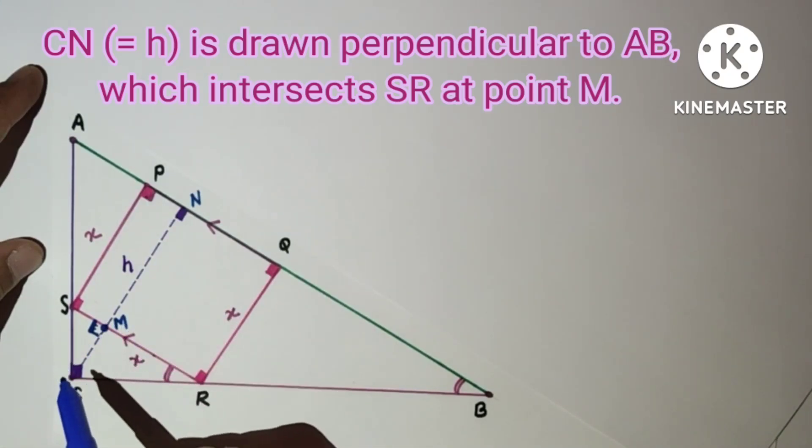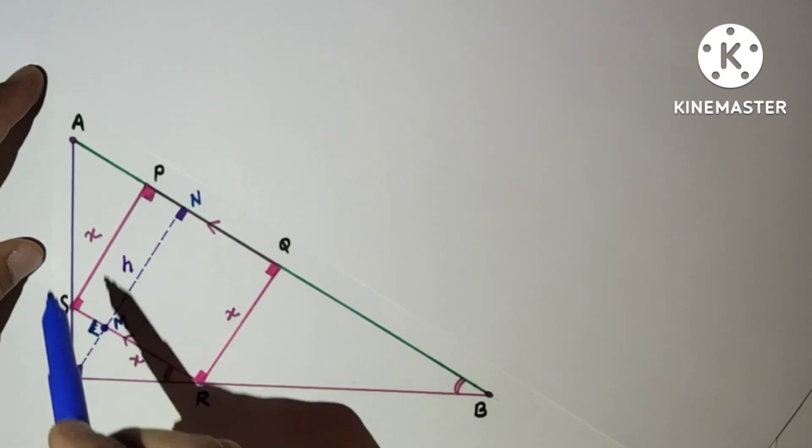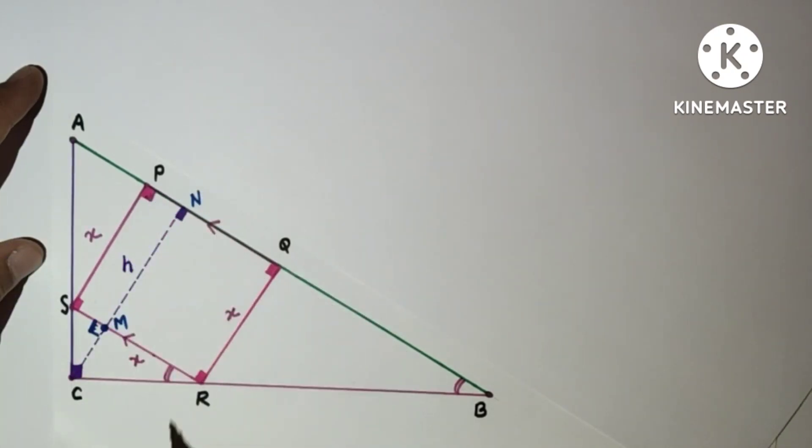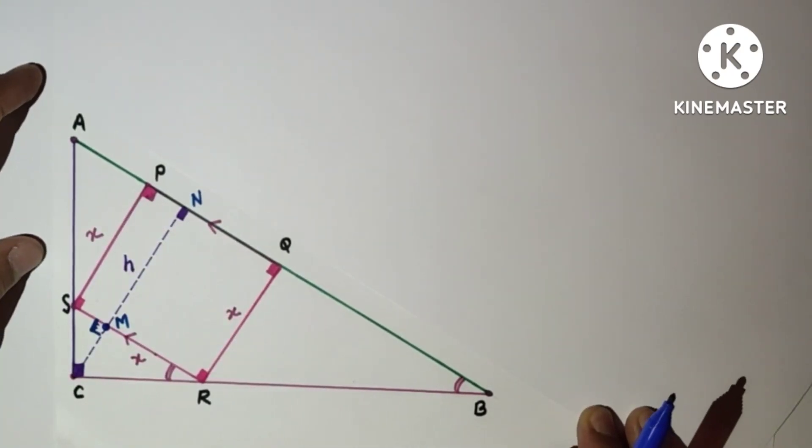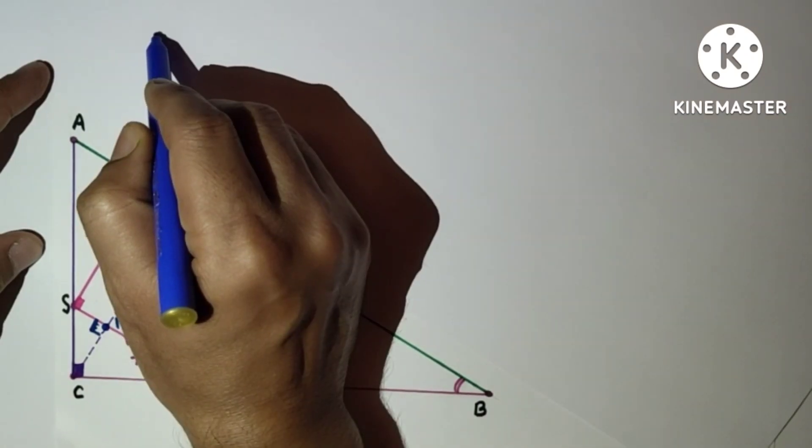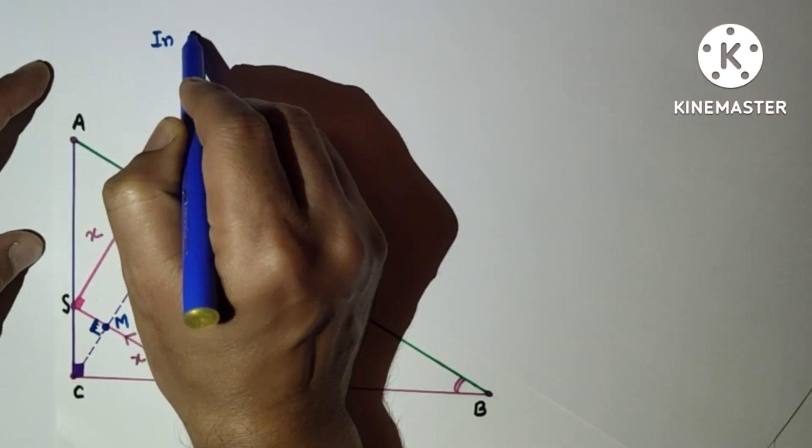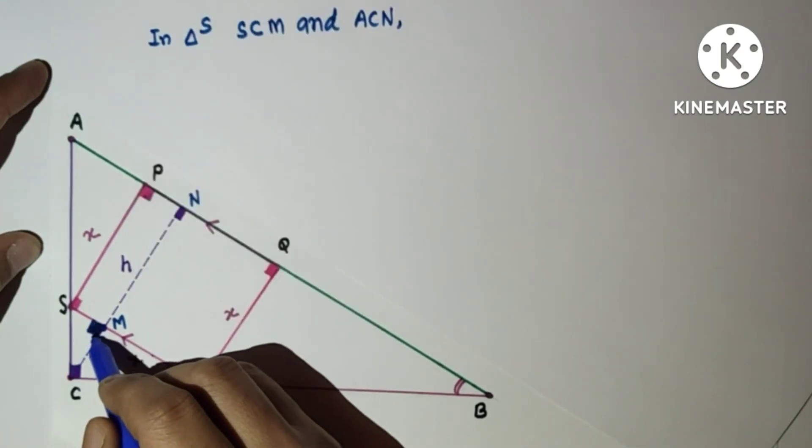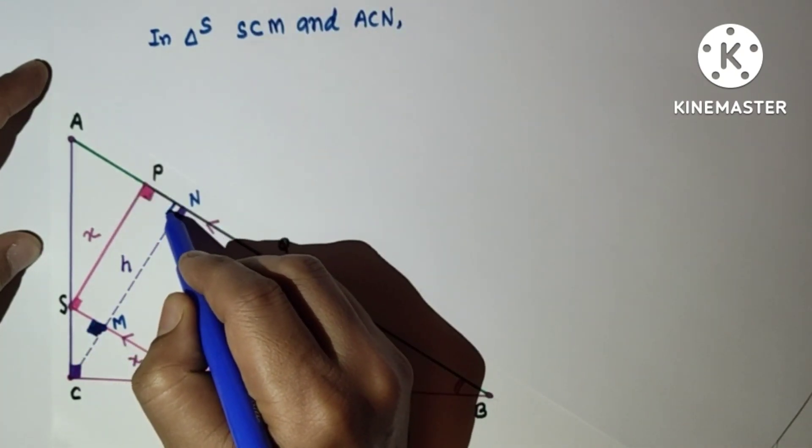We will consider two triangles: SCM and ACN, which we will prove similar, and SCR and ACB, which we will also prove similar. First, in triangles SCM and ACN, this is 90°, this is 90°, and this angle is common.